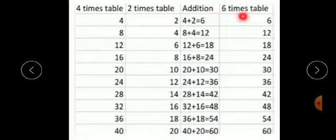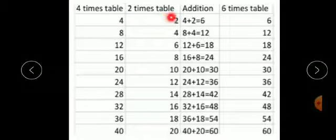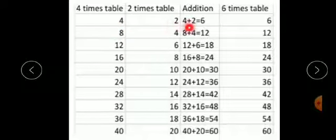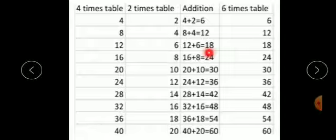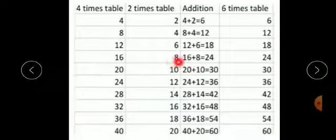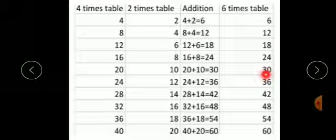Now we know that 4 plus 2 equals 6. So after adding the 4 times table and the 2 times table we get the 6 times table. 4 plus 2 gives 6, so 6 ones are 6. 8 plus 4 gives 12, so 6 twos are 12. 12 plus 6 gives 18, so 6 threes are 18. 16 plus 8 gives 24, so 6 fours are 24. 20 plus 10 gives 30, so 6 fives are 30.